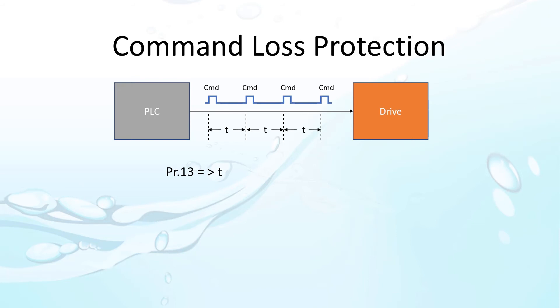If the drive doesn't get a command within that amount of time, then it will toggle the output we just talked about and it will do whatever you put in parameter PR12. You can tell the drive to do nothing, free spin down, use normal deceleration, keep running at the last known input, keep running at the last known output level, or go to the frequency you specify in parameter PR14.